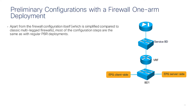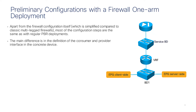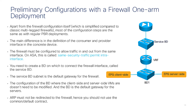What are the preliminary configurations? Most of the configurations are the same as with a regular PBR deployment. The main difference is when defining the interfaces in the concrete device configuration and the cluster or logical device configuration. The other preliminary configuration — not ACI specific — is that the firewall must be able to send and receive from the same interface.